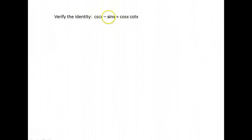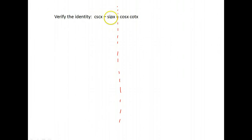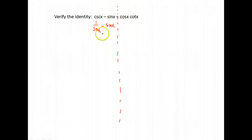Here's another — let's verify this identity. The cosecant of x minus the sine of x: we want to show that that's equal to cosine times cotangent. We want to show that the left and right sides are equivalent. You can work a little bit with the right side and a little with the left until they both look the same, or just take one side and work with it until you get the other side. I'm going to work with the left side because I know that cosecant and sine are related. Cosecant is 1 over sine x, so I have 1 over sine x minus sine x.